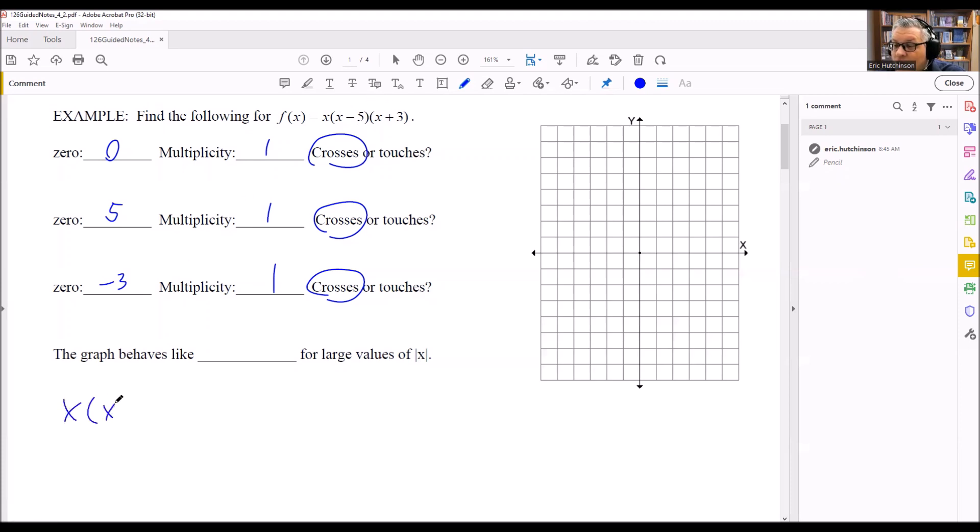So I'm going to get x squared. And then I have a 3 and a minus 5. 3x minus 5x is going to be minus 2x. And then I have negative 5 times 3, negative 15. Then I'm going to multiply all this through by x and get x cubed minus 2x squared minus 15x.